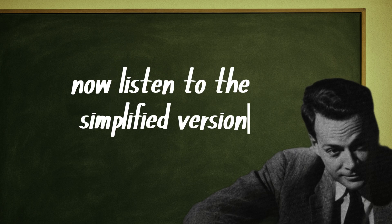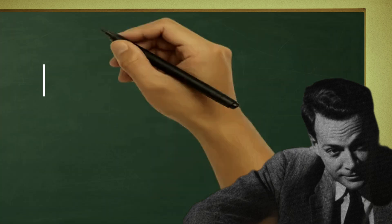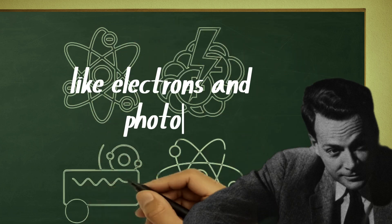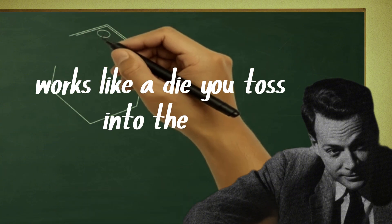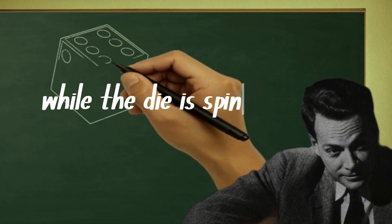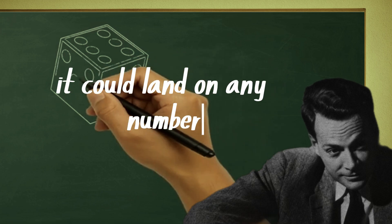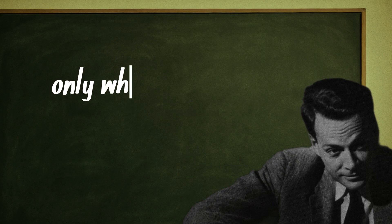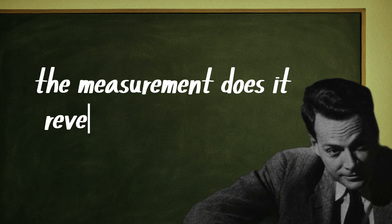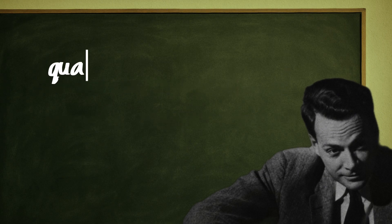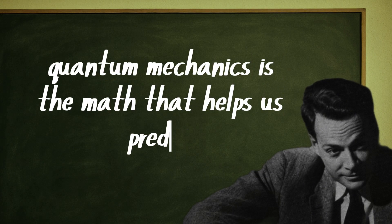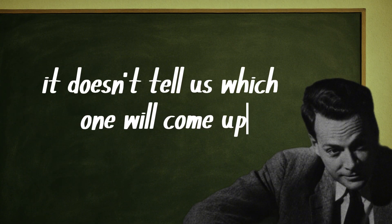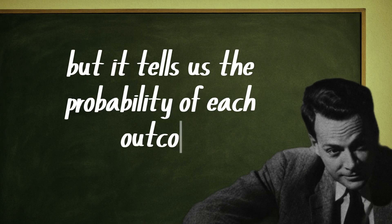Now listen to the simplified version, Feynman style. Imagine that the world of very small things, like electrons and photons, works like a die you toss into the air. While the die is spinning, it could land on any number. In fact, it's as if it's on all numbers at the same time. Only when it hits the table—the measurement—does it reveal a specific number. Quantum mechanics is the math that helps us predict the chances of each number appearing. It doesn't tell us which one will come up, but it tells us the probability of each outcome.